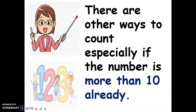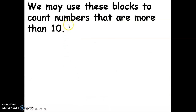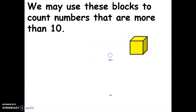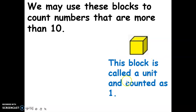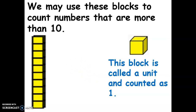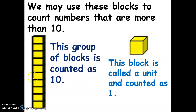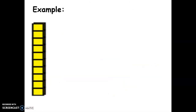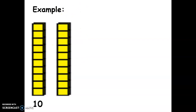Now, children, there are other ways to count, especially if the number is already more than ten. We may use these blocks to count numbers that are more than ten. This block is called a unit and counted as one. This group of blocks is counted as ten — let's count: one, two, three, four, five, six, seven, eight, nine, ten. We may also call this a long. For example, we have one long, or a group of ten blocks, plus another ten.